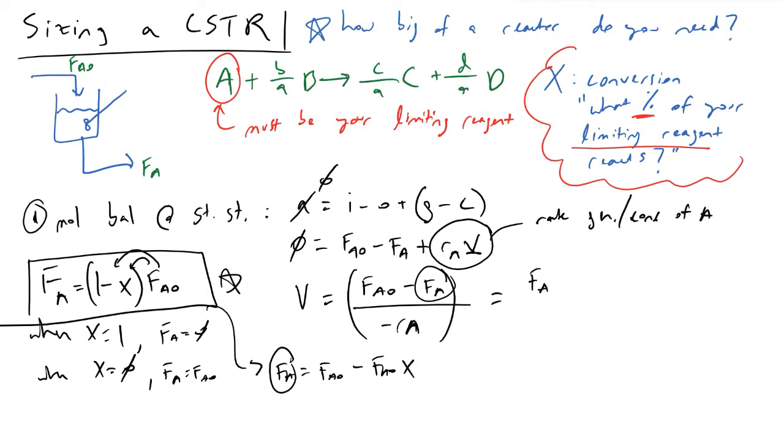This term is really equal to FA0 minus FA0 plus FA0 times x quantity divided by minus RA. These first two terms cancel each other out, and we're left with the volume of our reactor is equal to FA0 times x quantity divided by minus RA.